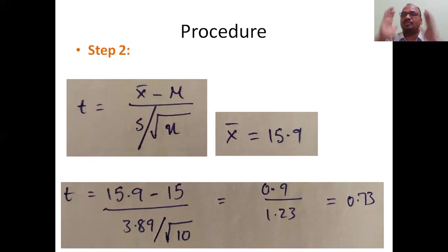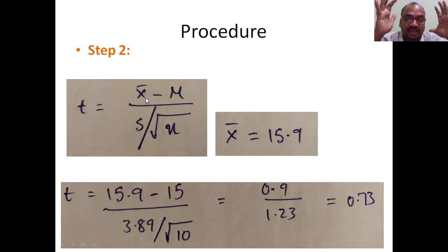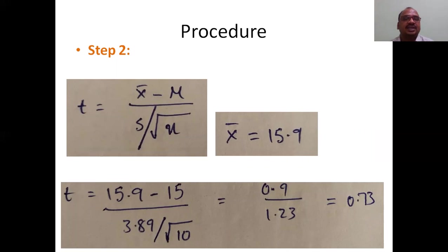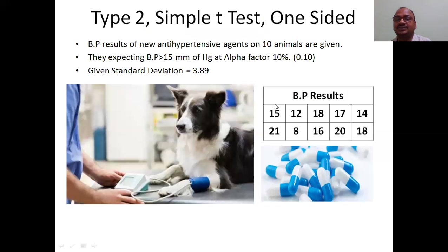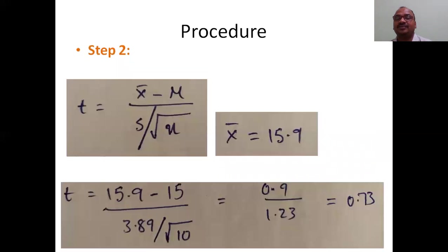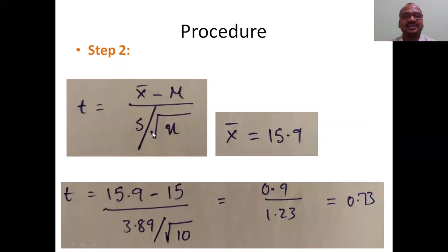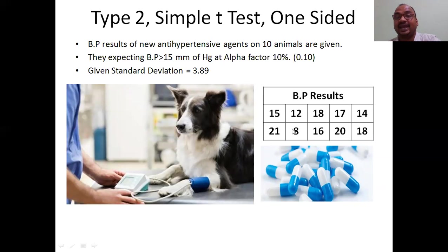Now I follow the formula. Type 2 t-test compares population mean mu with sample mean x-bar. The sample mean x-bar is 15.9 — the average of all 10 values. Mu is 15, which was already given. The standard deviation of 3.89 was also given in the problem.